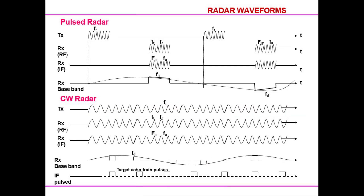Radar waveforms: here we have examples of pulse radar waveforms and CW radar waveforms. In pulse radar, the waveforms include transmitter, receiver radio frequency, receiver IF frequency, and receiver baseband. In pulse radars, because of the shared antenna between transmitter and receiver, there is a gap in sending and receiving. Whereas in CW radars, the pulses are continuous. The difference in the frequencies of transmitter and receiver is sampled and converted back to analog waves, which helps in target response.